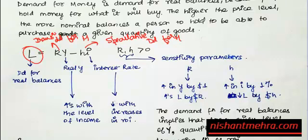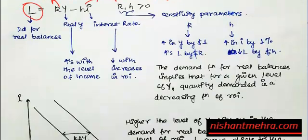So when the interest rate increases, demand for money — meaning the money you want to keep in your pocket — will fall. When the interest rate falls, you prefer to keep money in your pocket, so demand for money increases. This confirms the negative relationship between interest rate and demand for money. Here k and h are sensitivity parameters: k for transactions demand and h for speculative demand for money.